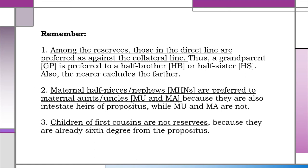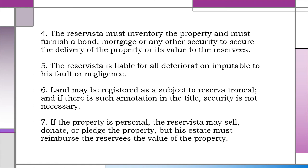2. Maternal half-nieces or half-nephews are preferred to maternal aunts or maternal uncles because they are also intestate heirs of the propositus, while maternal aunts and uncles are not. 3. Children of first cousins are not reservees because they are already sixth degree from the propositus. 4. The reservista must inventory the property and must furnish a bond, mortgage, or any other security to secure the delivery of the property or its value to the reservees.